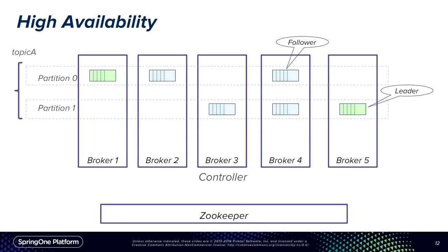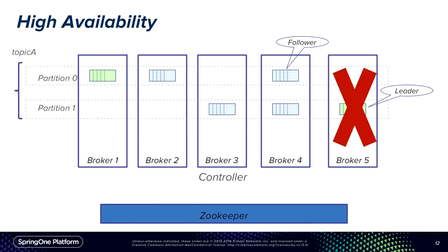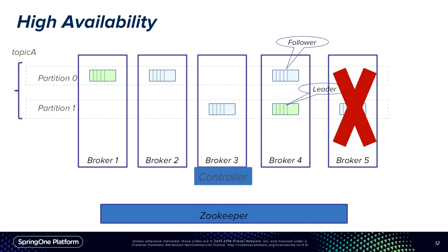If one of the brokers dies, Kafka implements high availability via Zookeeper sessions. Each broker has a session; when a session expires (typically a five-to-six-second timeout), Zookeeper detects the failure. The controller — one broker responsible for maintaining partition state across the entire cluster — watches Zookeeper. When a broker dies, the controller identifies which partitions were hosted there and elects one of the in-sync replicas as the new leader, so producers and consumers can continue without any downtime.